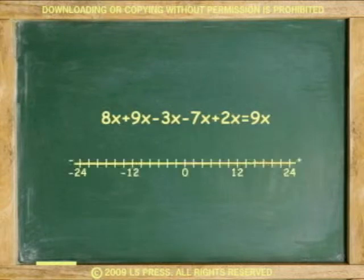8x plus 9x minus 3x minus 7x plus 2x equals 9x. To solve this expression using the number line, start at 0.